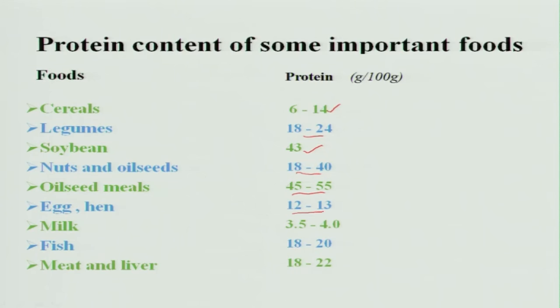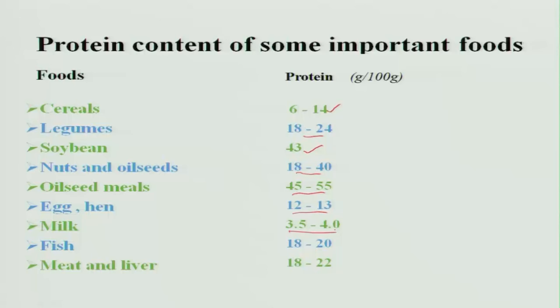Egg contains 12 to 13 grams per 100 grams and is a complete protein. Milk is also a complete protein. We generally call milk and egg protein as reference proteins, and we compare other foods against them. Fish contains 18 to 20 grams, and meat and liver contain 18 to 22 grams of protein.